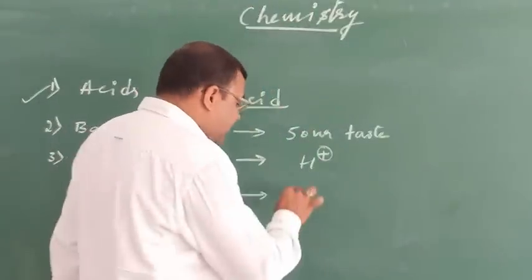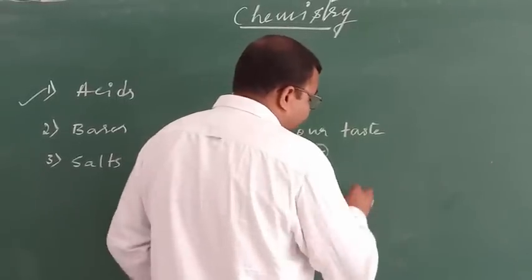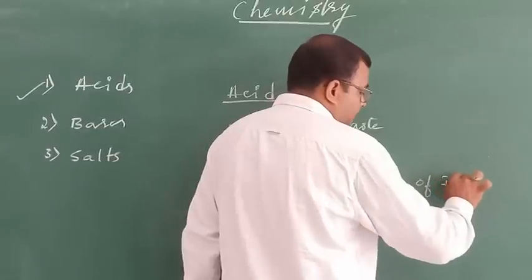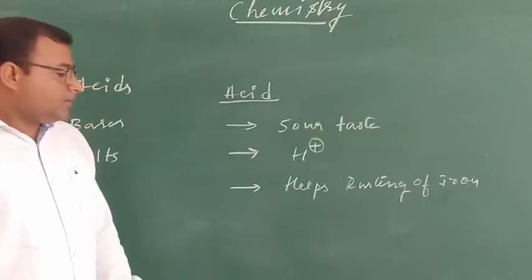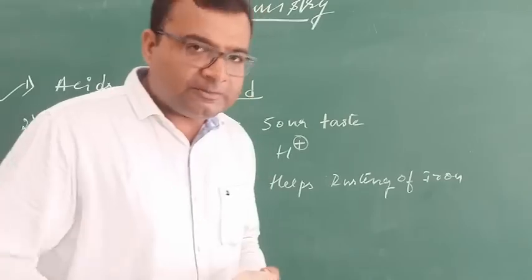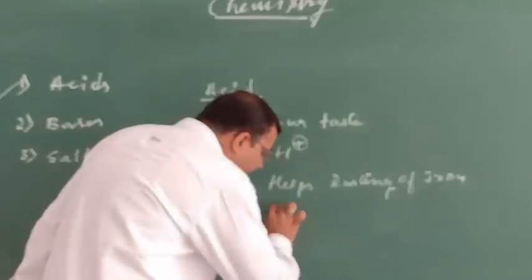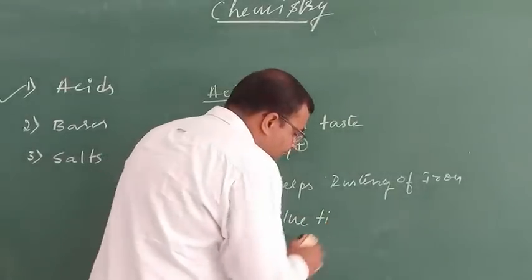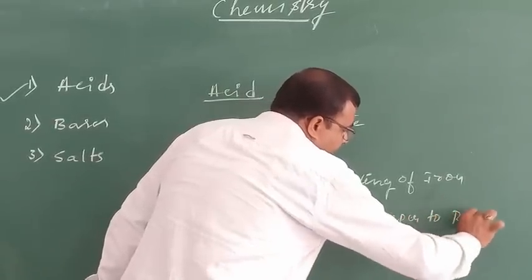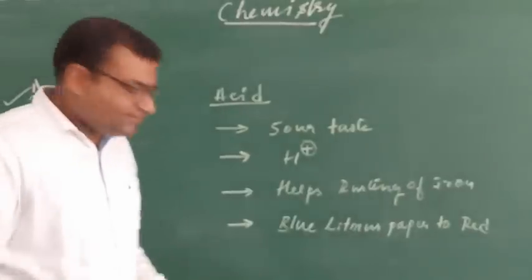Acids also help in the rusting of iron. Now, how do you identify that a substance is an acid? You take a blue litmus paper — when you dip blue litmus paper into an acid, it changes its color from blue to red. So blue litmus paper changes to red color in the presence of an acid.